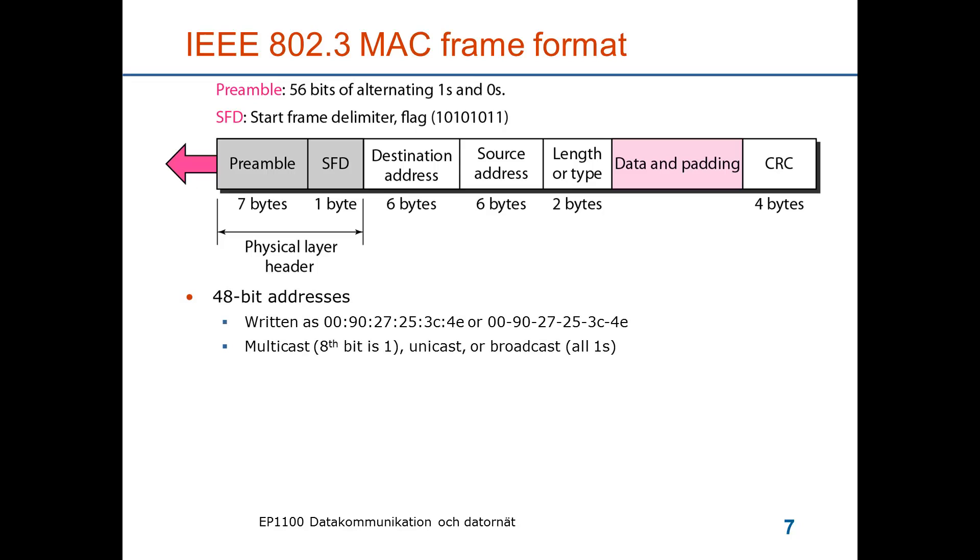The 48-bit addresses are written in hexadecimal numbers. So one byte are two numbers going from zero up to F and the bytes are separated by colons or hyphens. You see here two formats of the same address with the first byte being 00 and the last byte being 4E. There is a class of multicast addresses which is recognized by the eighth bit which is always 1. If it's zero there are unicast addresses and there is a broadcast address of all ones.